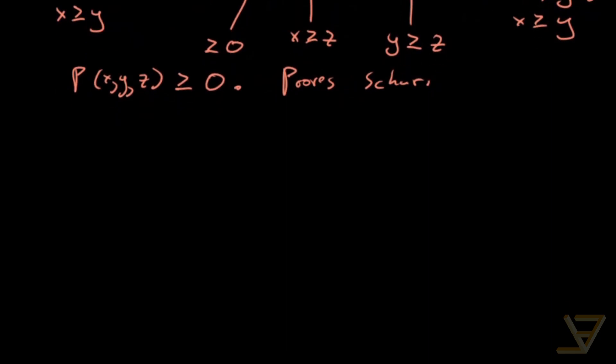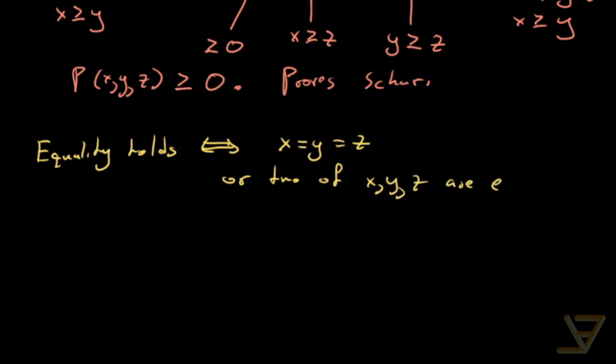The last thing that I want to mention is that we can actually find the exact equality case. Equality holds if and only if x = y = z, or two of x, y, z are equal and the third is zero.